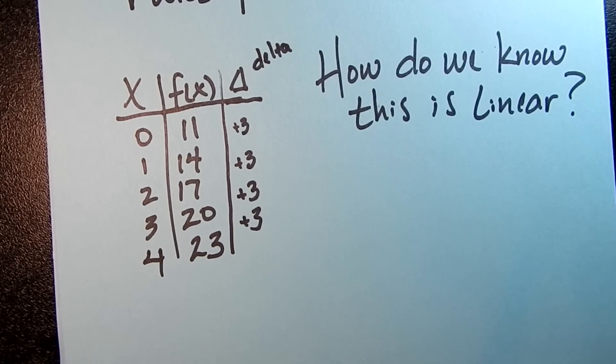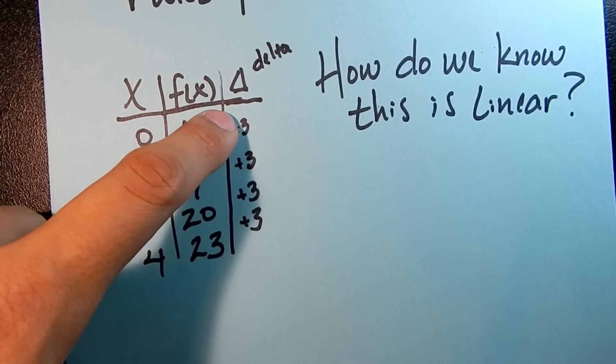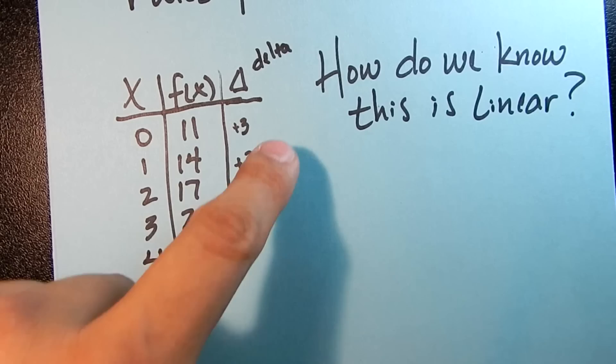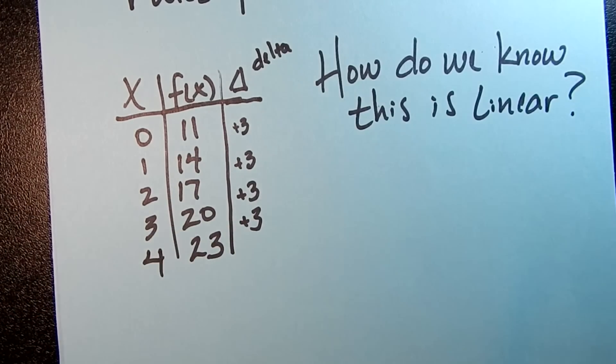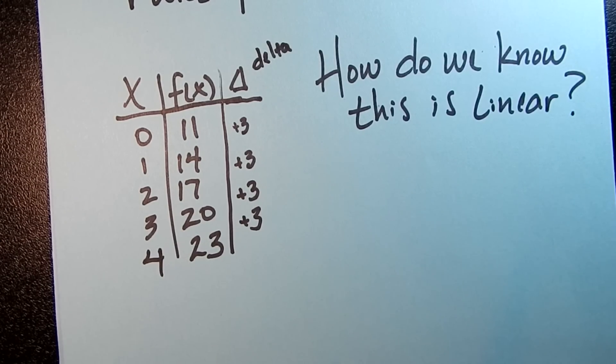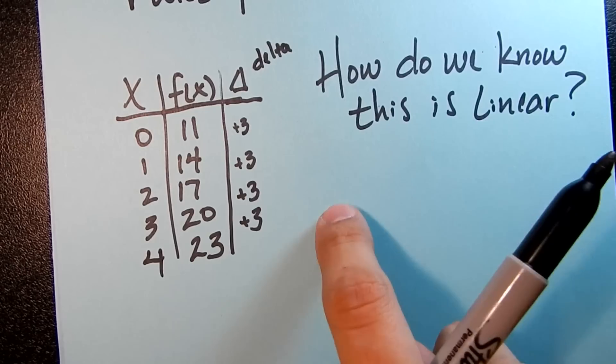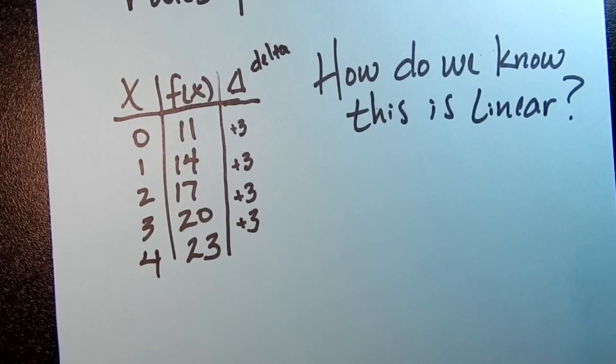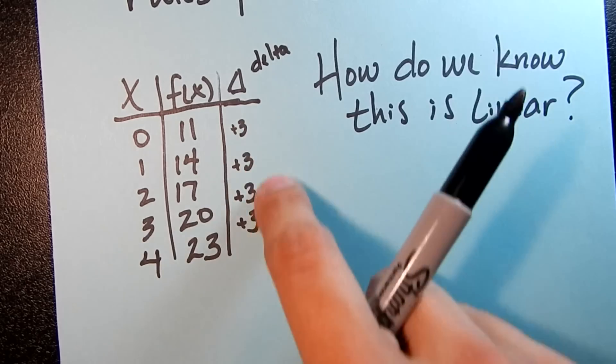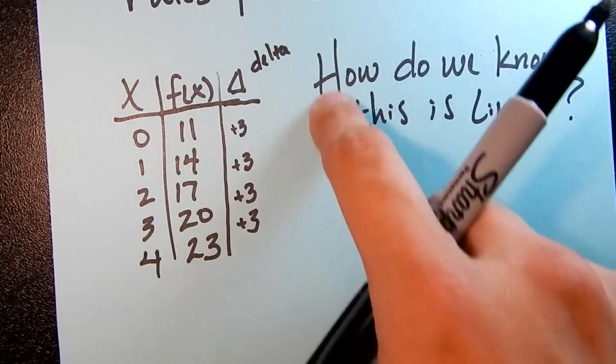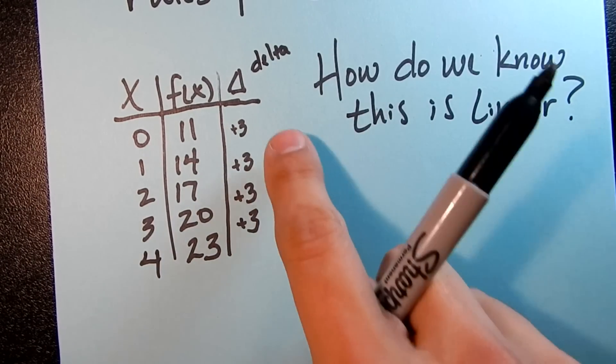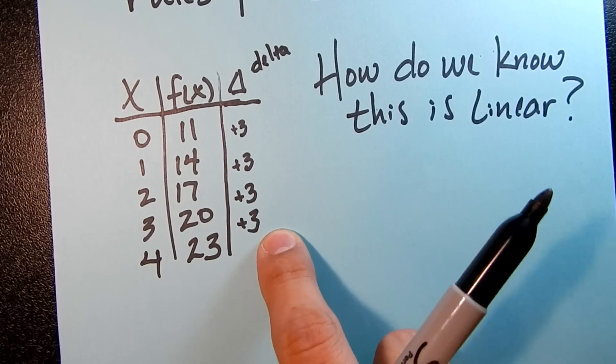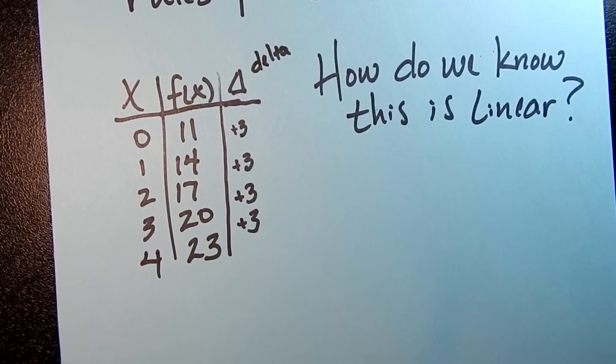So you might, in the very near future, see functions where the first delta is not the same, but the second delta is. Now it's not a linear function, but it is something kind of close to that. Those are what we call quadratics, or maybe the third delta. Those are cubics and quartics and quintics. And there are all sorts of functions that we can get from looking at these successive delta columns. But for right now, we're just working with the simplest ones, where the first delta column is constant.